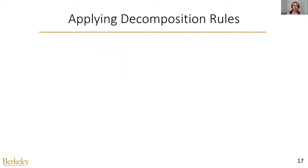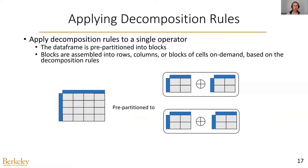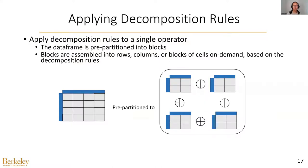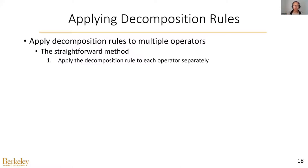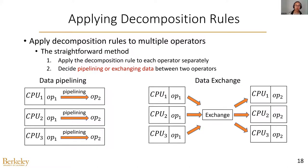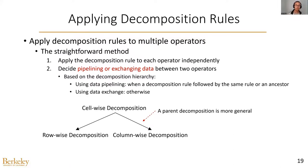Now we have the decomposition rules. The next question is how to apply them. For a single operator, the data frame is pre-partitioned into blocks. Based on the decomposition rules, we assemble the blocks into rows, columns, or larger blocks of cells. For multiple operators, one straightforward method is to apply the decomposition rule to each operator separately and decide between pipelining or exchanging data, where data exchange is much more costly due to communication cost. The decision is based on the decomposition hierarchy, where the parent decomposition is more general than the child. Specifically, we use data pipelining if the decomposition rule is followed by the same or a more general one; otherwise, we use data exchange. For example, if row-wise decomposition is followed by cell-wise, we can pipeline the data, but not the other way around.